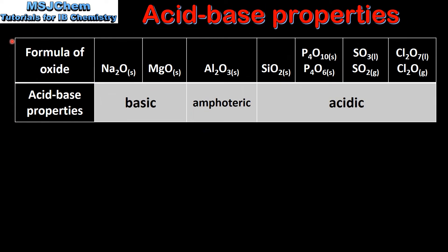Next we look at the acid-base properties of the period 3 oxides. Both sodium and magnesium form basic oxides. Aluminium oxide is amphoteric, which means it can act as an acid or base. Silicon, phosphorus, sulphur and chlorine all form acidic oxides.